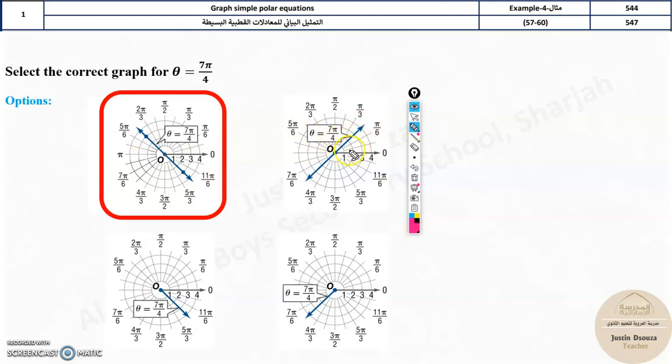Why? Because it is not 315. It is not 7π/4. This is also wrong. Though it is 315 degrees, this one is only positive R. If it is minus R, wrong. Here R is not given. So it should be R and minus R, both the sides, both lines.